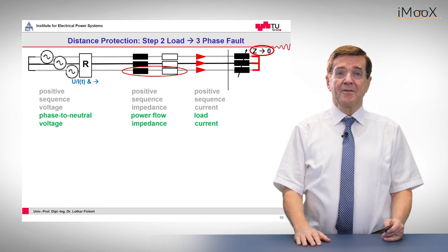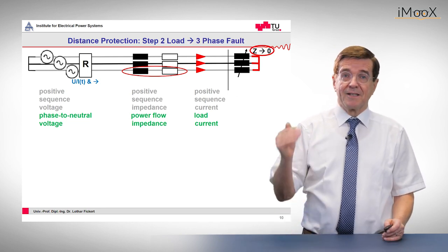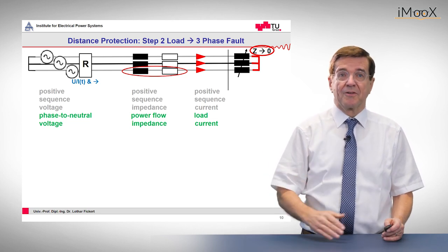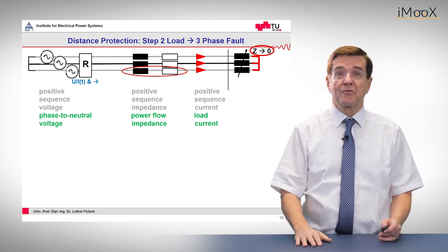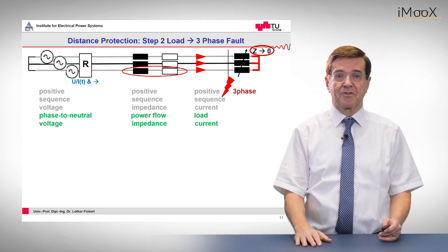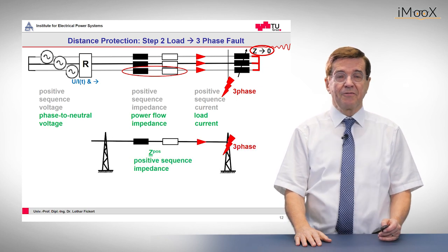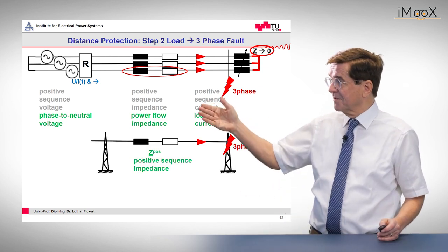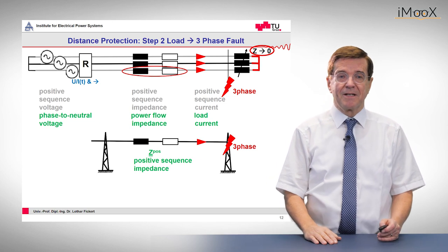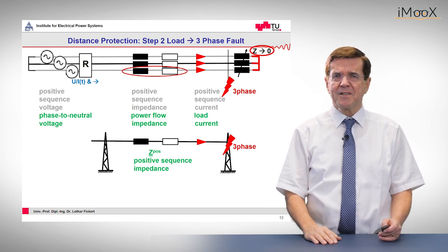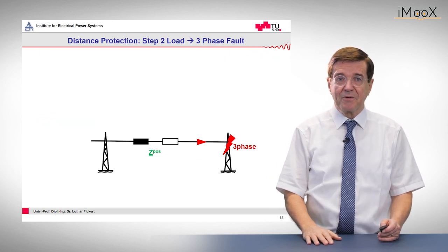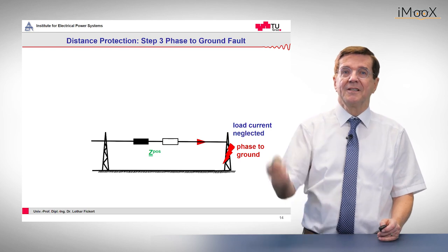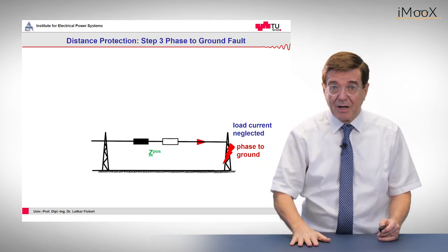Now we reduce the impedance value of the load to zero and then we have a three-phase short circuit. Again, the three-phase short circuit is represented by the positive sequence impedance. This is familiar to everybody, but now we change the three-phase fault into a single-phase to ground fault.